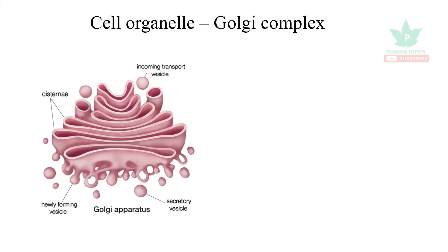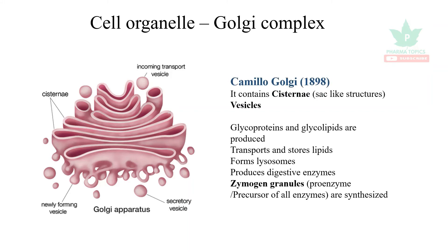The next organelle is the Golgi complex. It is responsible for the three-dimensional structure and functional activity of proteins. It is named after the scientist who discovered it, Camillo Golgi, in the year 1898. It is concerned with the transport and storage of proteins, lipids, and digestive enzymes. All enzymes are produced in the inactive stage in the Golgi apparatus.